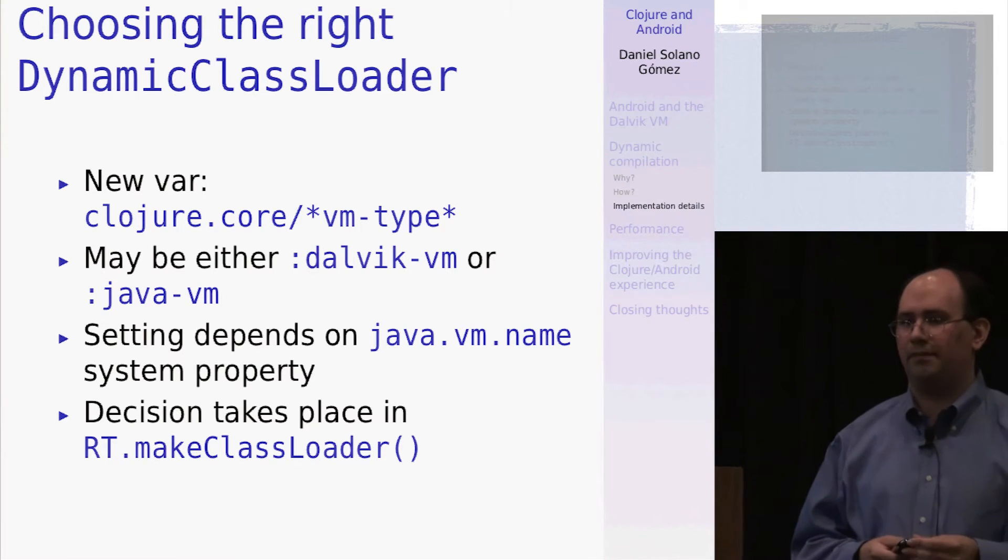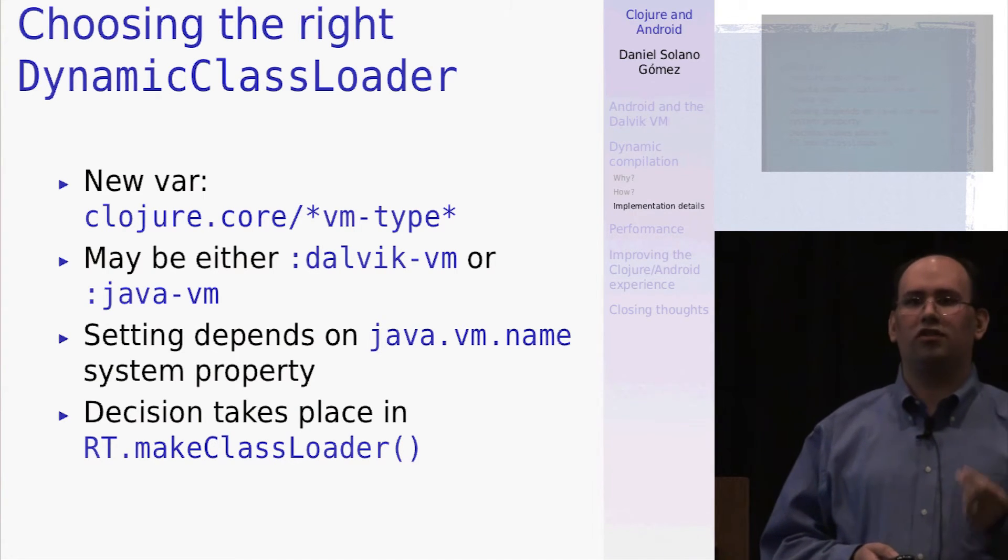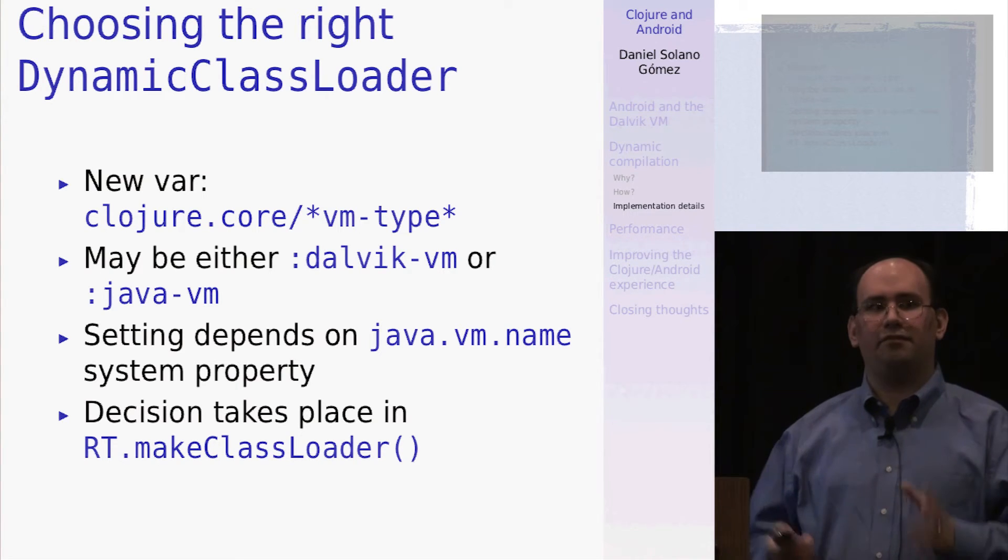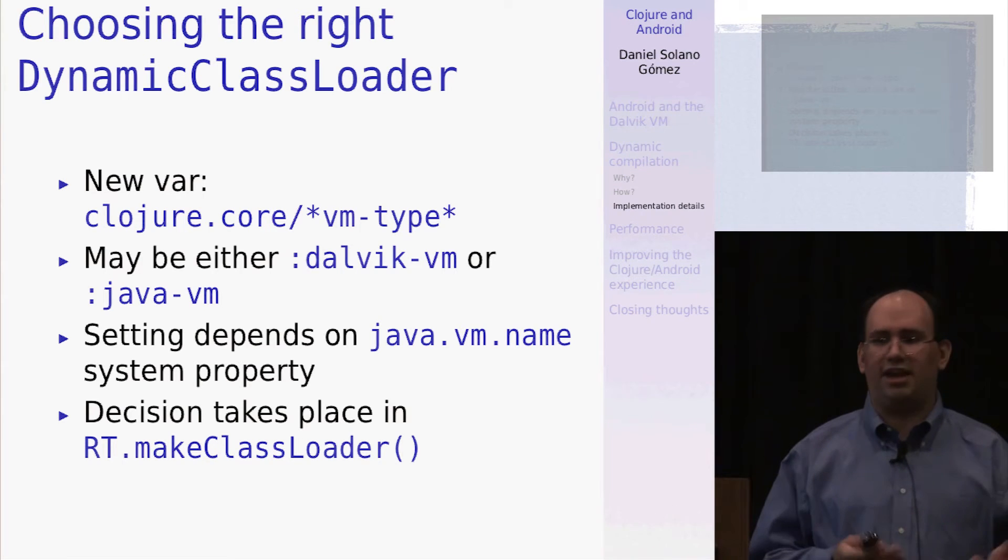So how do we know which one of these things to use? I created a new var in Clojure Core for the different VM types. And I look at the system property, java.vm.name, to see am I running on Dalvik or not? And if so, I can set that var to the appropriate value and change the behavior of Clojure itself.